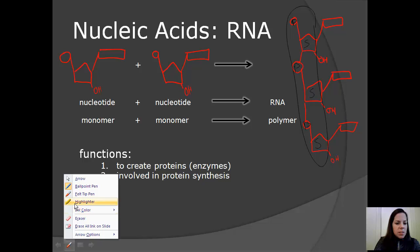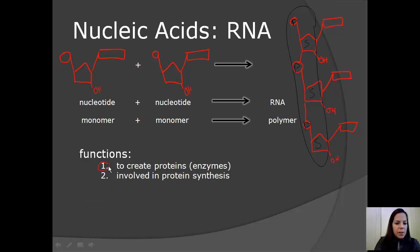So the functions of RNA are to, number one, create proteins or enzymes. And it's also involved in protein synthesis, which we're going to learn about further on in Biology 12.